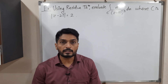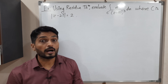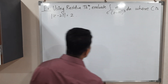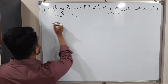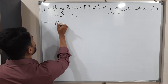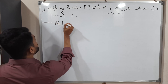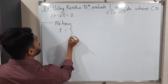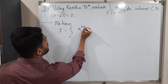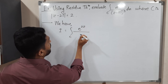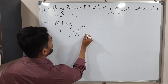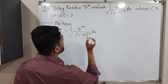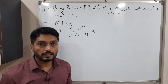I will start with the given integral, I will call it as I. We have I is equal to integration over C of e raised to 2z upon (z minus πi) cubed, dz. This is the given integral.